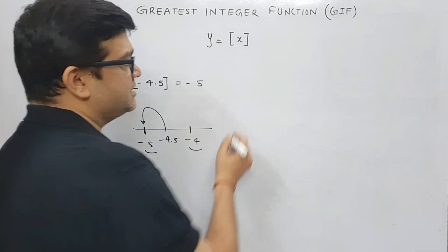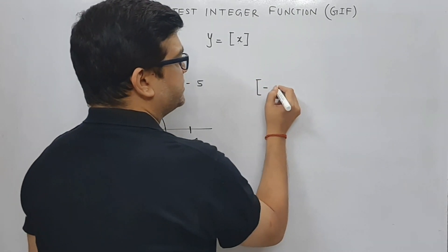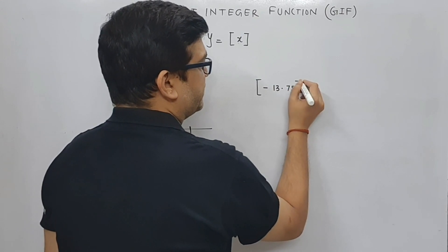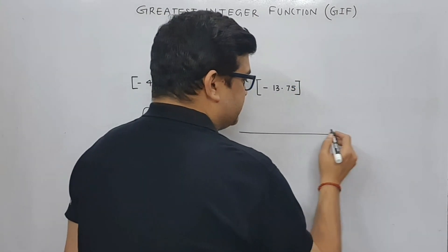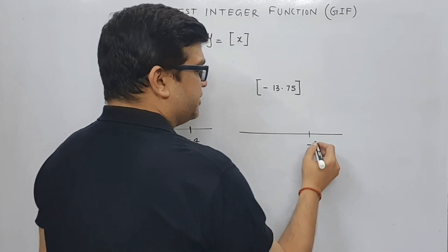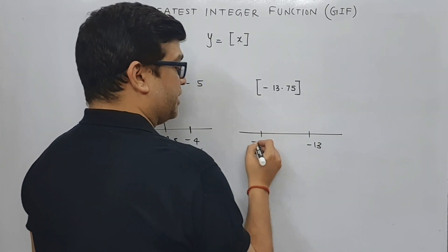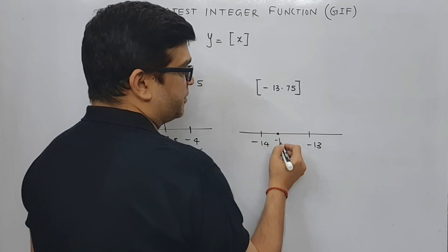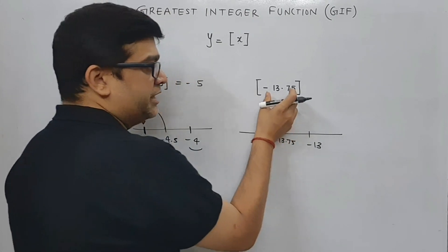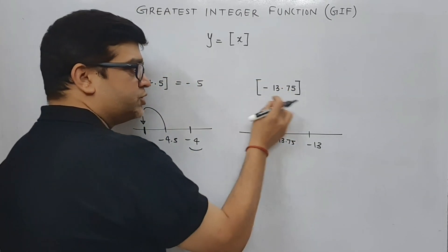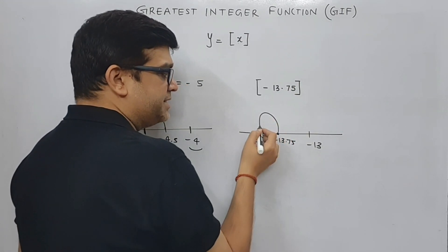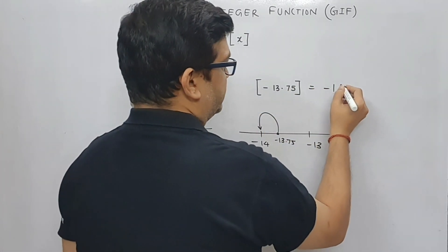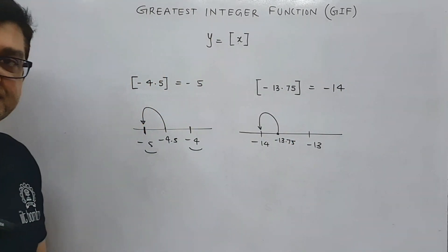Let's take another example: minus 13.75. Now minus 13.75 lies somewhere between minus 14 and minus 13. It is a non-integer, so box of a non-integer will be the immediate left hand side integer, and that is minus 14.